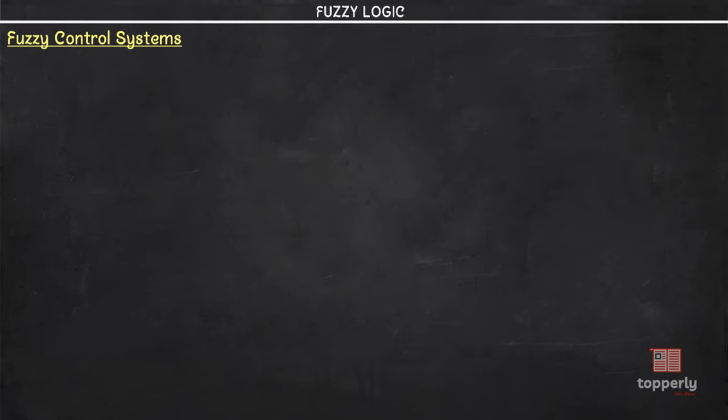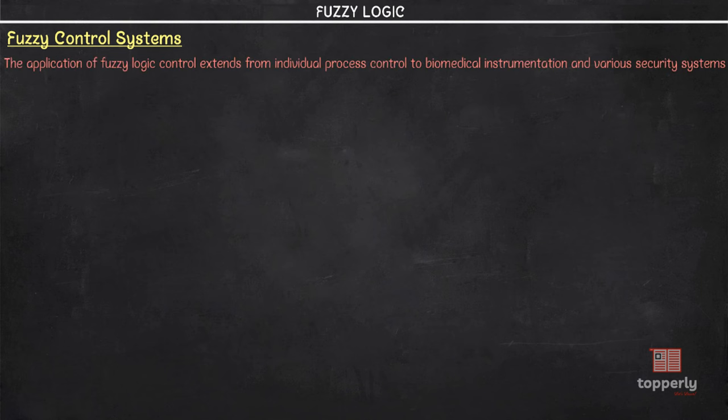Fuzzy logic is applied in various control applications and almost all the consumer products we use have fuzzy control. The applications of fuzzy logic control extend from individual process control to biomedical instrumentation and various security systems. Some examples of fuzzy control systems include controlling the room temperature with the help of an AC, control on washing machines, traffic lights, etc.